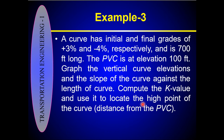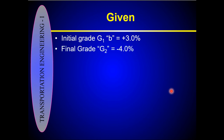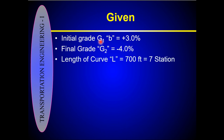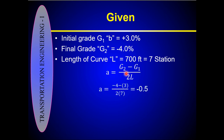Note that this is a crest curve. In our example, initial grade G1, also denoted by coefficient B, is given. Final grade G2 is minus 4 percent, and the length of the curve is 700 feet, or 7 stations. We can calculate coefficient A, which is half the difference between the two grades: A = (G2 − G1) / (2L). With G2 = −4 and G1 = +3, the difference is −7, and L = 7, giving A = −0.5.